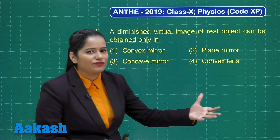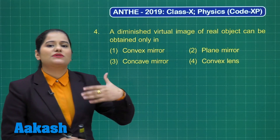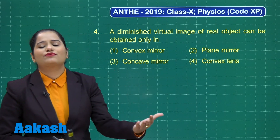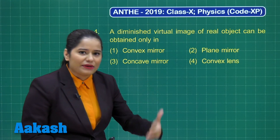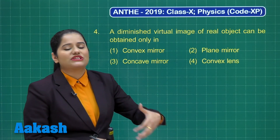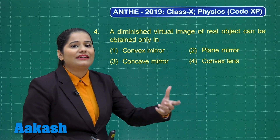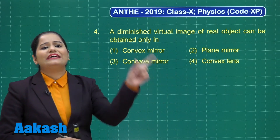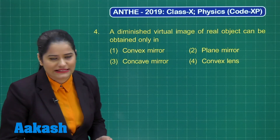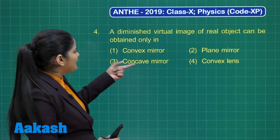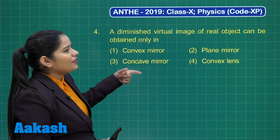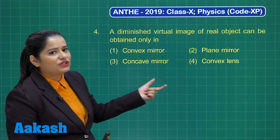Option 2 is plane mirror, which is incorrect because plane mirror always forms an image that is virtual, erect, and of the same size. Concave mirror cannot be the option either.